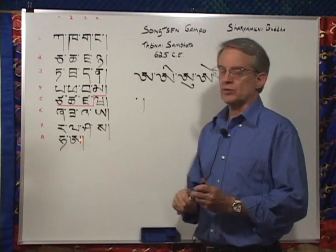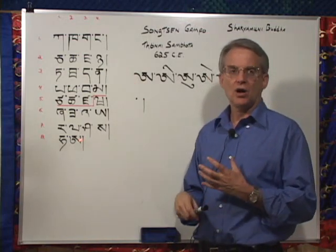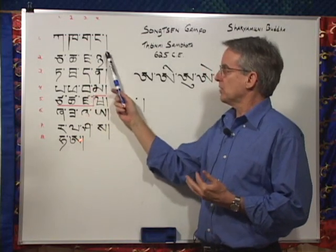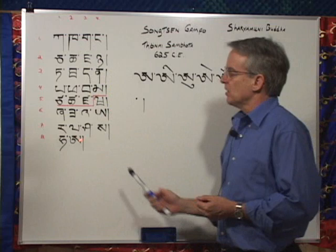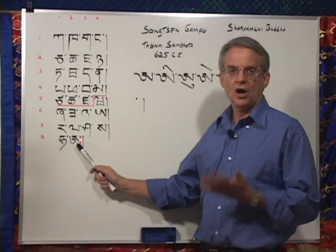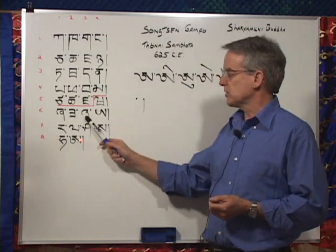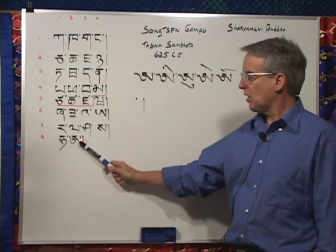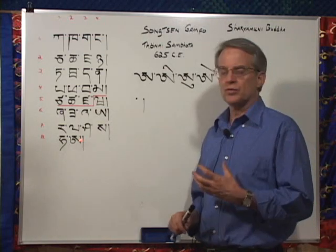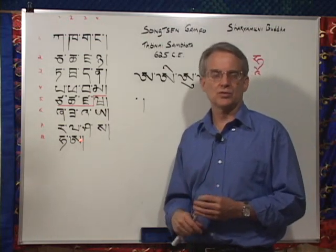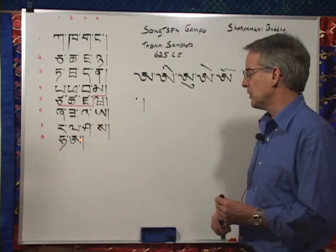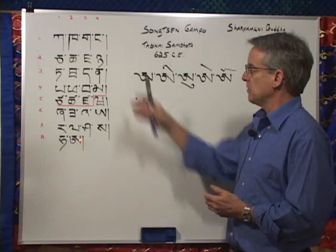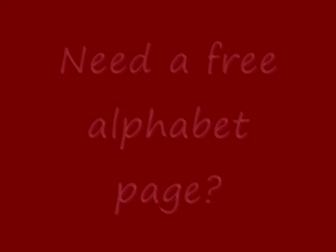Each of the thirty consonants has the vowel sound ah within it — we call it the inherent ah, or the inherent vowel sound. The last letter of the alphabet is a high-toned ah, and the third letter in the sixth row is a low-toned ah. The high-toned ah is regarded as the universal sound, the mother of all sound, the perfection of wisdom in one sound, and that is the ah that's found in all of the thirty consonants.